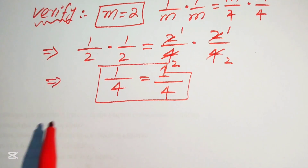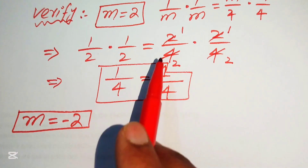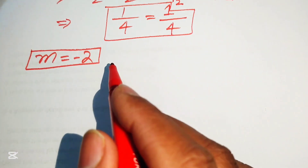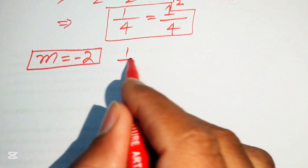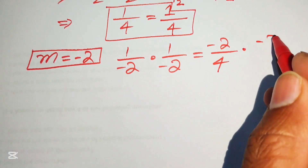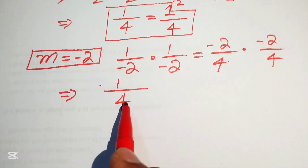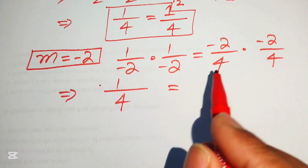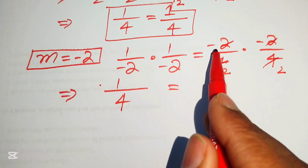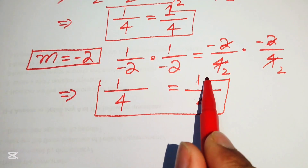Now verifying m = -2: substituting gives (1/(-2))(1/(-2)) = (-2/4)(-2/4). On the left, minus times minus becomes plus, so we get 1/4. On the right, 2 × 2 = 4 and minus times minus is plus, so we also get 1/4. Thus m = -2 satisfies the equation.